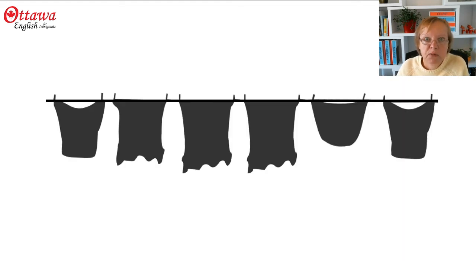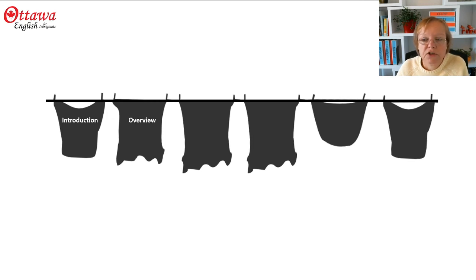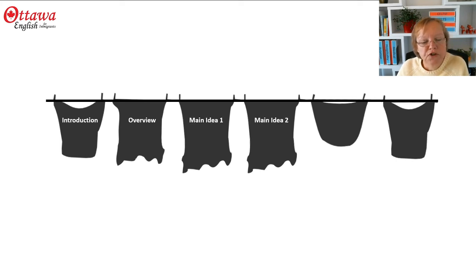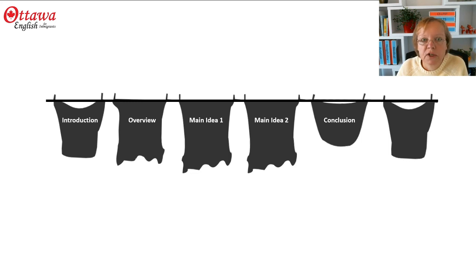So the components of your presentation need to include an introduction, where you paraphrase the statement about the visual and add a little information about the axes. Then an overview, where you imagine looking at your picture from the other side of the room with no details. Then two main ideas, each with a topic sentence identifying what you're talking about, followed by details. Then a conclusion or concluding remark. And sprinkled throughout, sentence variety.